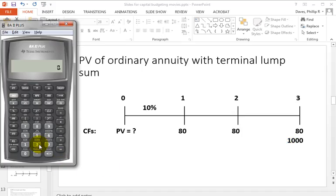And so what do we want to do? We have three as N. The interest rate is 10, because that's our discount rate. We want to calculate the present value.